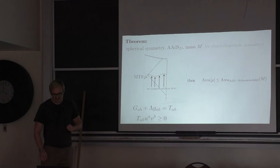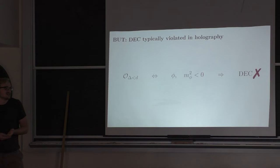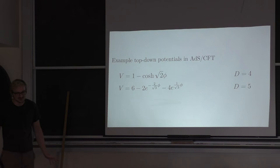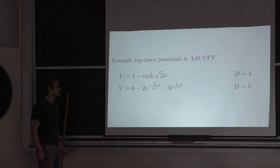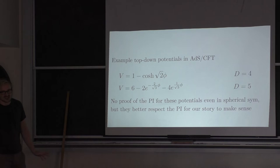The dominant energy condition is typically violated in holography. A standard example: take a primary operator on the boundary that is irrelevant — a scalar single-trace operator — dual to a bulk field with negative mass squared. This leads to a violation of the DEC. As long as the potential is negative somewhere, we have a DEC violation. Here are some top-down potentials from string theory — they are not just negative, they become exponentially very negative. There's no proof of the Penrose inequality for these potentials, so it's interesting to check for violations.